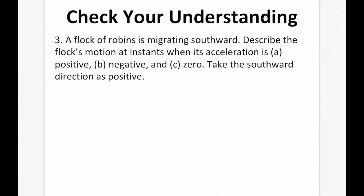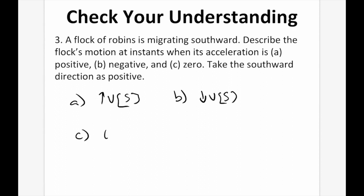Question 3: a flock of robins is migrating southward; describe the motion when acceleration is (a) positive, (b) negative, and (c) zero, taking south as positive. (a) Positive acceleration means increasing velocity in the southward direction. (b) Negative acceleration means decreasing velocity — the flock is slowing down. (c) Zero acceleration means velocity is constant — if velocity isn't changing, acceleration is zero.